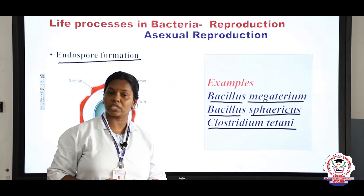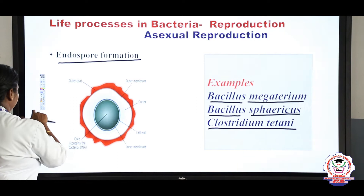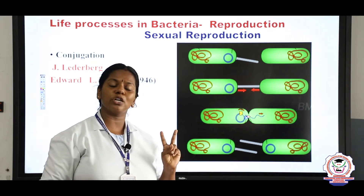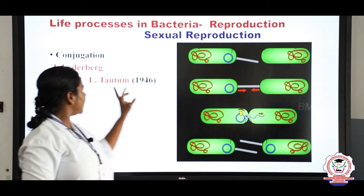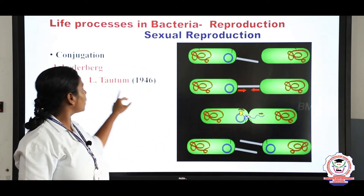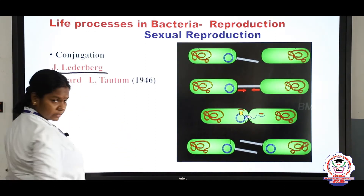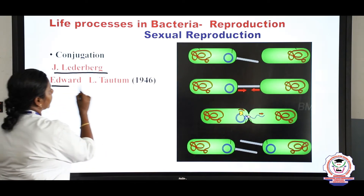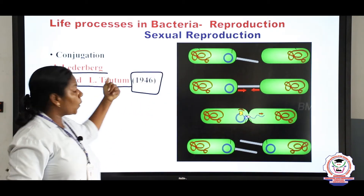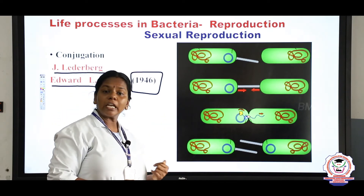So far we have discussed about asexual reproduction: binary fission and endospore formation. Now we are going to discuss about sexual reproduction. Sexual reproduction involves two individuals. The three methods are: conjugation, transformation, and transduction. Conjugation was given by J. Lederberg and Edward L. Tatum in the year 1946. This is an important question — who discovered or proposed conjugation?